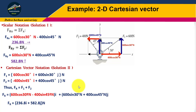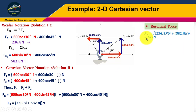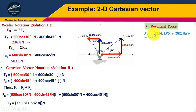Now we have to calculate the magnitude of the resultant force. Using the Pythagorean theorem with the x and y components, the resultant force equals 629 Newtons.